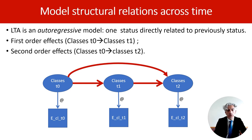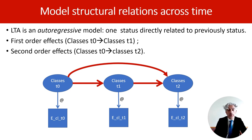While we usually consider that individuals' status at one time point is directly related to the status at the previous time point — that is, first order effects — we can also test hypotheses involving second order effects. For example, individuals' status at time two may also be related to their status at time zero, meaning there may be lagged effects of the initial status. We can test these models using likelihood ratio tests.